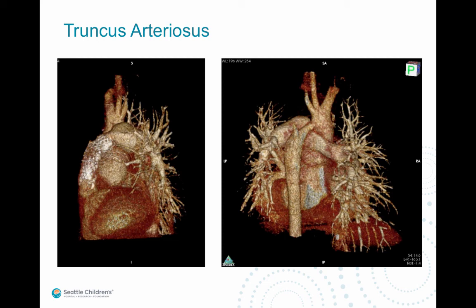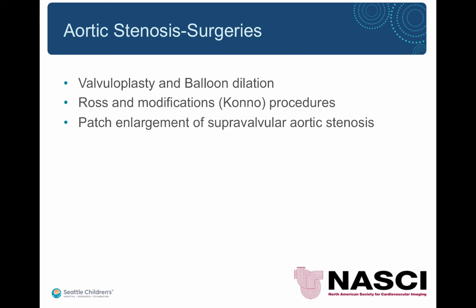The patient also had history of recurrent coarctations and tubular hypoplasia of the distal arch is still seen. Aortic stenosis surgeries and interventions include valvuloplasty and balloon dilatation, the Ross procedure and Ross-Konno modifications, as well as patch enlargement for supravalvular aortic stenosis.